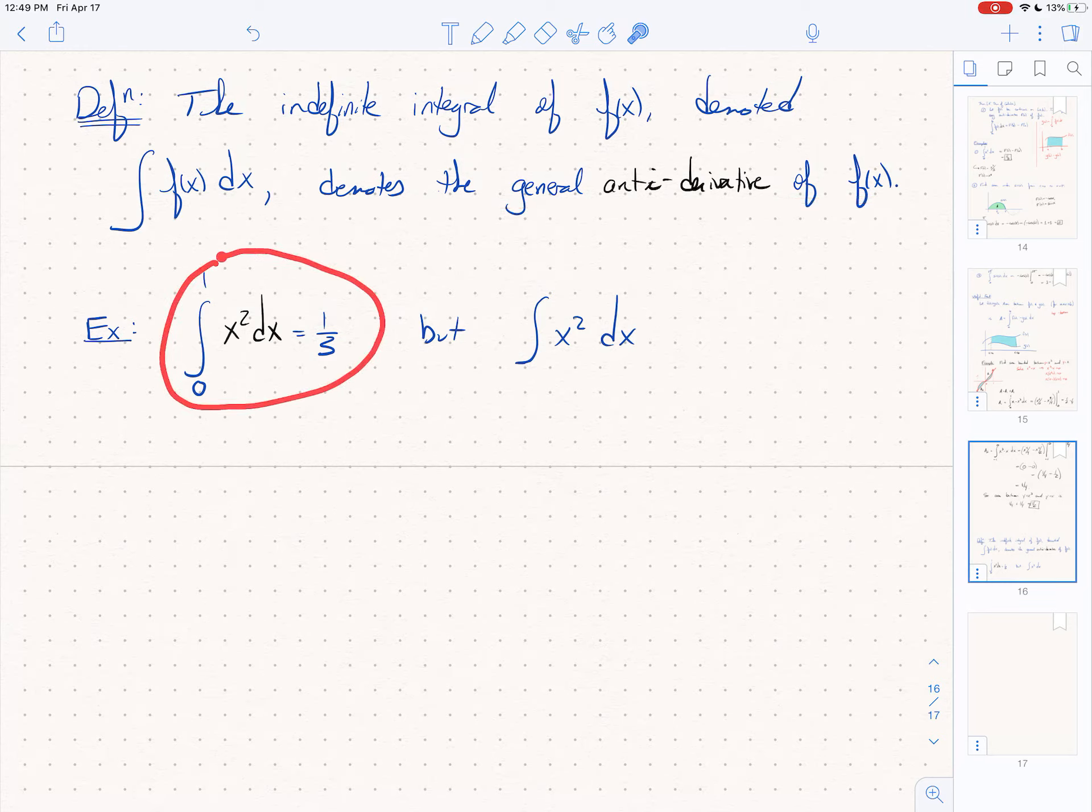For example, when you see bounds on this integral, this is a definite integral, and this you can interpret as a number. You're going to get a number. But when you see no bounds, then this is just asking for the antiderivative of x squared, which you know is x cubed over 3. It's the general antiderivative, so we throw on a plus c, and you want to watch that you don't forget the plus c.